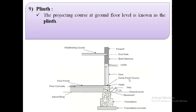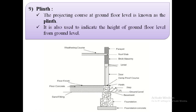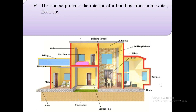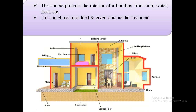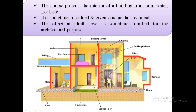The next term is plinth. The projecting course at ground floor level is known as the plinth. It is also used to indicate the height of the ground floor level from ground level. The course protects the interior of a building from rainwater, frost, etc. It is sometimes molded and given ornamental treatment. The offset at plinth level is sometimes omitted for architectural purposes.